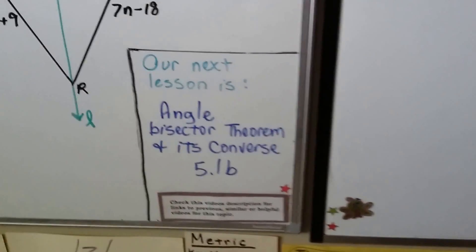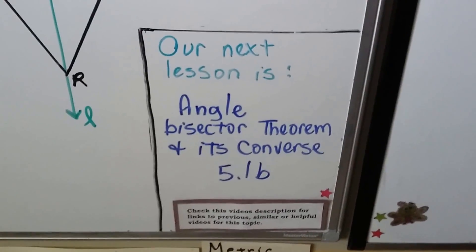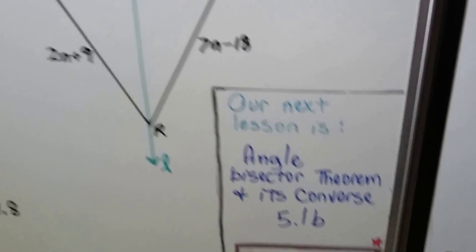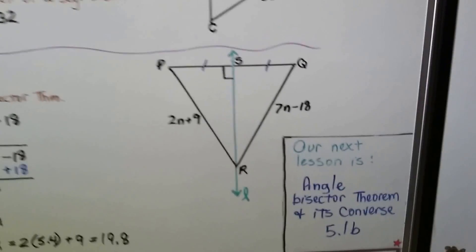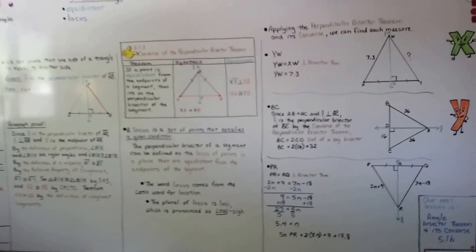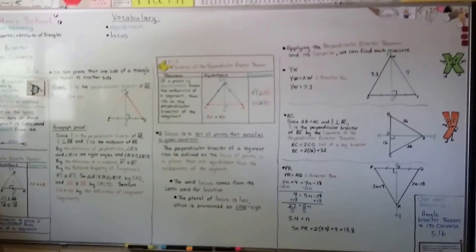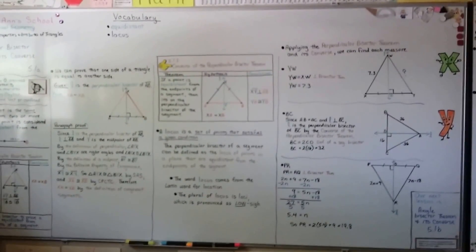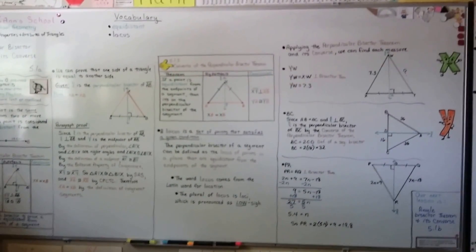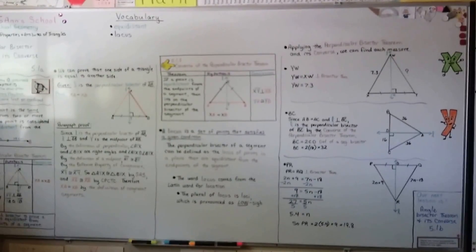Our next lesson is the angle bisector theorem and its converse — that's Lesson 5.1b. Make sure you wrote down these theorems if you needed to. I hope the day goes well for you, everyone's kind to you — see you next time, bye!